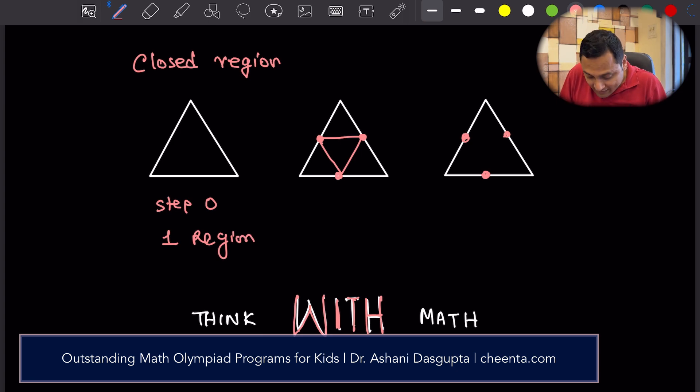Step 1. The first step. First time I do something to this triangle. I draw three midpoints. I join them with straight lines. Like this. And how many regions are there now? Well, there are four regions. 1, 2, 3, 4. It's a set of four closed regions. So four regions.